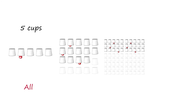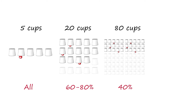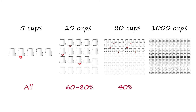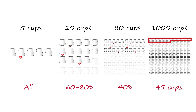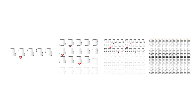With 5 cups, you really need to look under all of them to be accurate. With 20 cups, somewhere between 60 to 80%. With 80 cups, as you start approaching 40%, you're going to be just as accurate. And what if there were 1,000 cups? How many would you have to look under to be just as accurate as you were looking under 30 of the 80 cups? You'd only need to look under about 15 more — or 45 cups total — to be just as accurate.